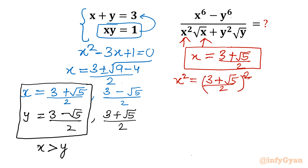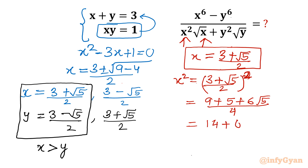I will apply the (a + b)² formula — a² plus b² plus 2ab — divided by the denominator squared. So x² equals (14 + 6√5) / 4. This is our x² value, which I will put in the denominator.